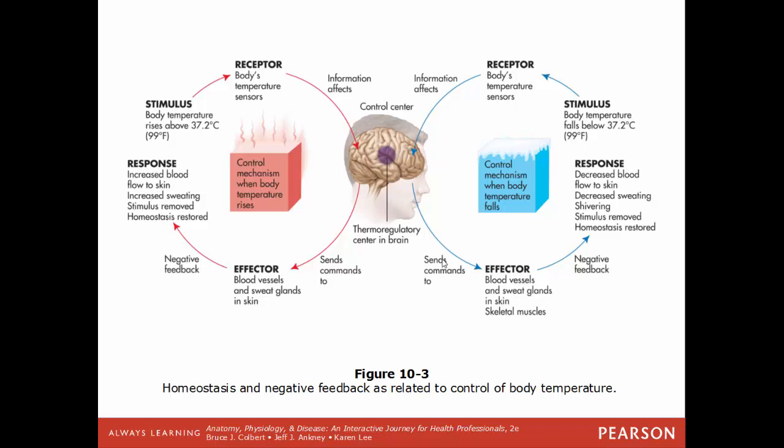Conversely, if the body gets too cold, negative feedback signals cause blood vessels to constrict — directing blood flow toward vital organs to minimize heat loss — and sweat glands turn off since sweating would cool the body further. Shivering is also stimulated to generate more heat and raise body temperature. So the same process of negative feedback applies whether the body temperature is too high or too low.